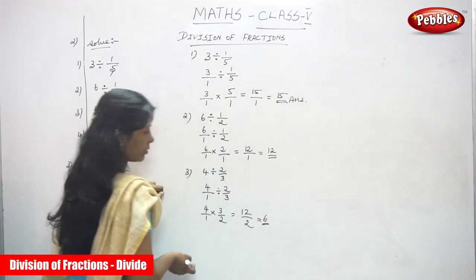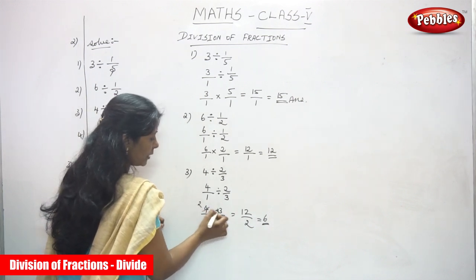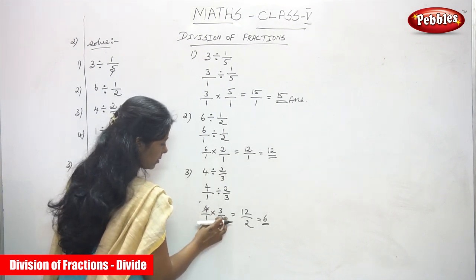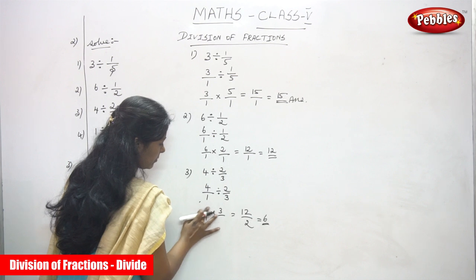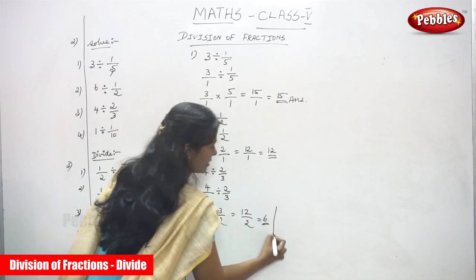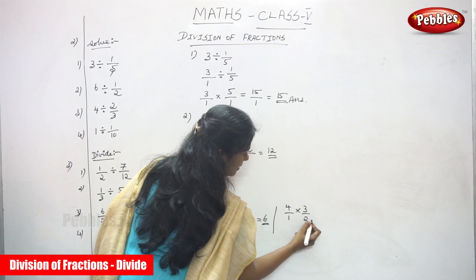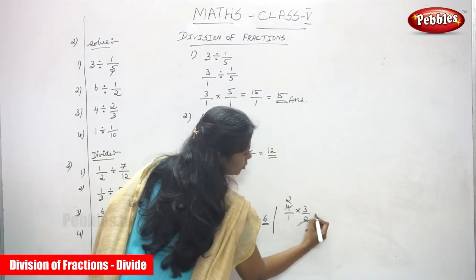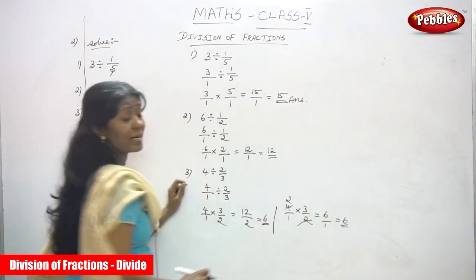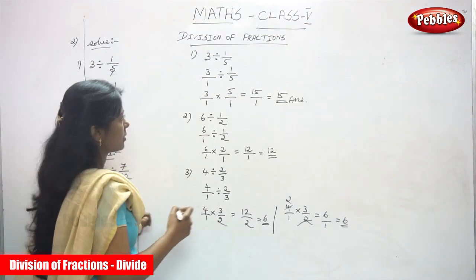Alternatively, you can cross-cancel the numbers. Cancel 2 into 4 to get 2, then 2 into 3 gives 6. So 4 by 1 into 3 by 2 — cross by 2: 2 twos are 4, 2 into 3 equals 6, so 6 by 1 gives 6. Both methods give the same answer of 6, which is the right answer.